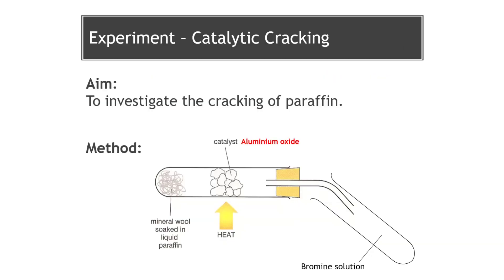Here's a diagram that shows the apparatus we would set up if we were doing a cracking experiment in the classroom or in the lab. We'll talk through the procedure, the results, and how we know if we've cracked a long chained alkane and produced these smaller, more useful products. Our starting point for this cracking experiment is the long chained alkane, paraffin.